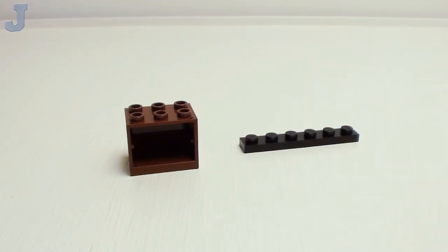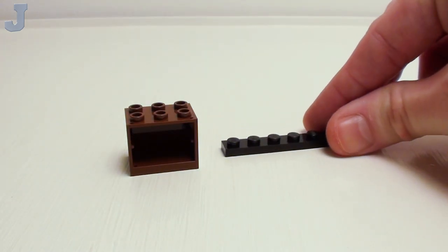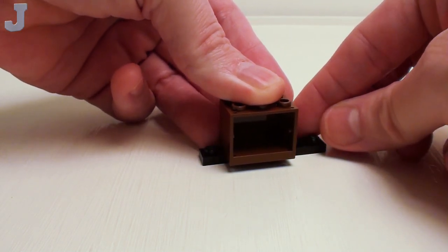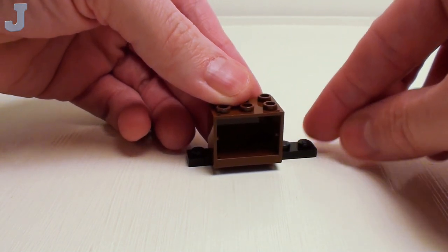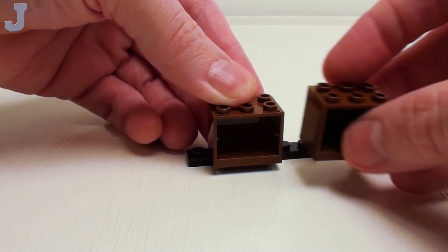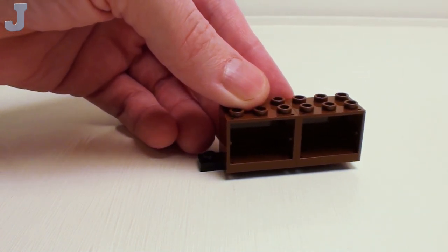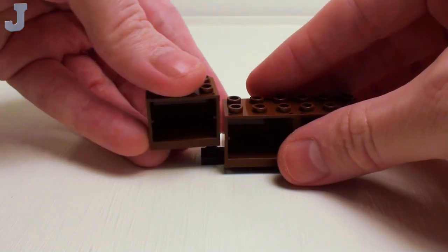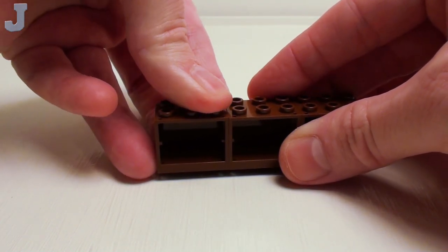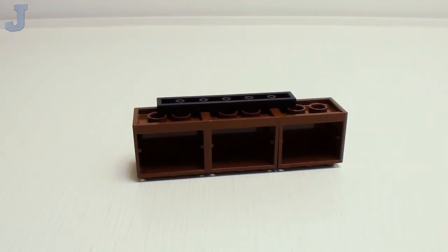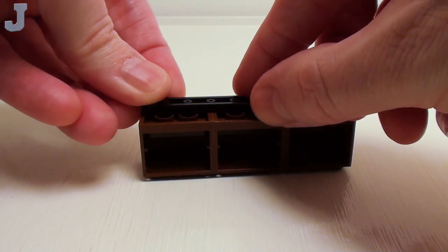For our dresser-width mirror, let's take a 1x6 plate. I'm going to take a 2x3x2 cupboard. I'm going to place it on the 1x6 plate like so. On the right-hand side, let's set down a 2x3x2 cupboard and another 2x3x2 cupboard on the left-hand side. Now we're going to flip this over and set down five studs.